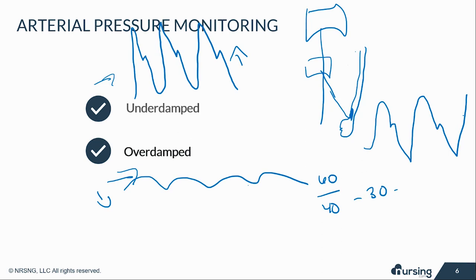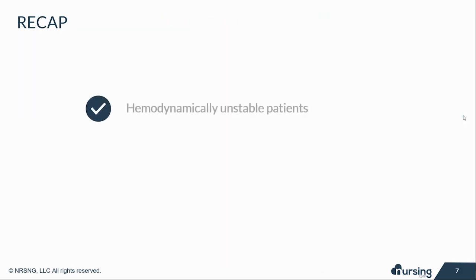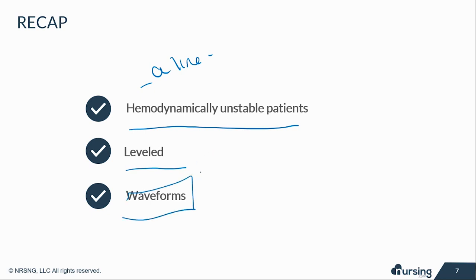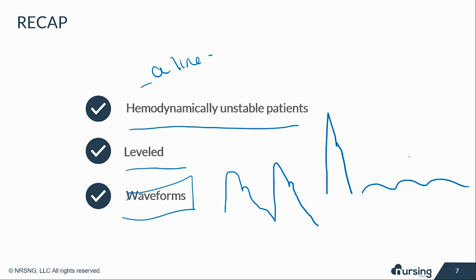To recap: A-lines are for hemodynamically unstable patients, usually those on pressors who need close blood pressure monitoring. Make sure the transducer is leveled to the phlebostatic axis for accurate readings. Always monitor the waveforms — is it a good-looking waveform, or is it peaked and underdamped, or overdamped? You need to know what normal waveforms look like so you can ensure the blood pressure reading is accurate.